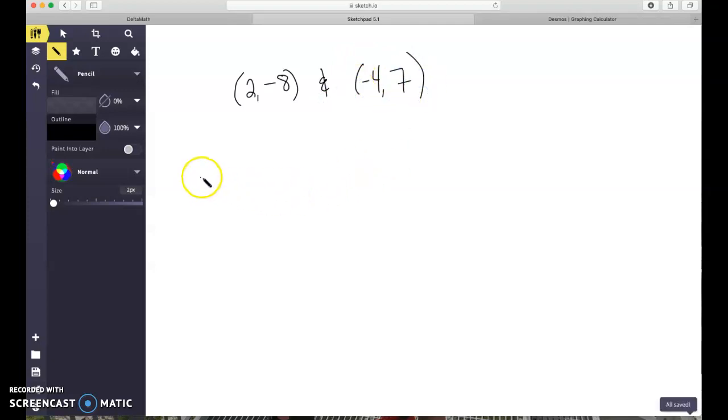And I'm going to use my slope formula, y2 minus y1 over x2 minus x1. I don't know why I wrote a y there. That should say m, because I'm finding slope.